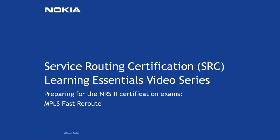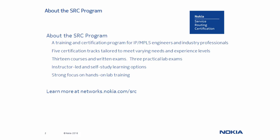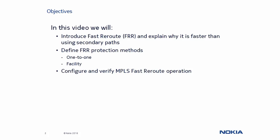Hello, and welcome to this SRC Learning Essentials series video about MPLS Fast Reroute. If you are not familiar with the Service Routing Certification Program, you can learn more by visiting our website at www.networks.nokia.com. In the following presentation, we will discuss two different ways to recover when the connectivity provided by an MPLS tunnel is interrupted: Secondary Paths and Fast Reroute. We will also explain why Fast Reroute provides a quicker recovery method, performed using either 1-to-1 or Facility, and we will discuss the differences between the two. Finally, we will head to our lab environment to configure and verify MPLS Fast Reroute operation.